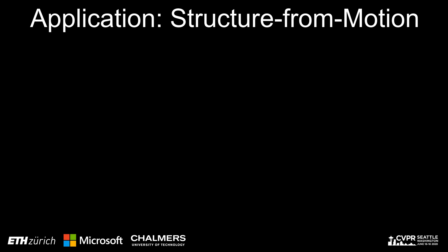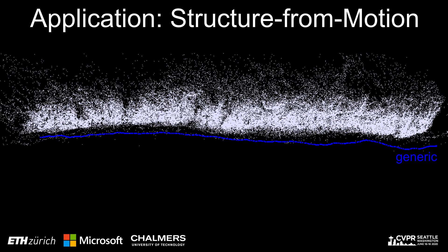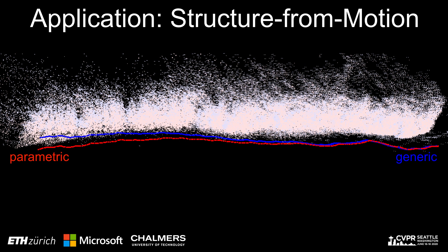A natural question is whether the bias has any impact on applications. To answer this, we conducted a structure from motion experiment. Since no ground truth is available, we compare the drift between trajectories obtained with a generic camera model and a parametric model. In this case, we observe a drift of about 2% over the length of the trajectory. This is significant, as state-of-the-art SLAM systems typically exhibit a drift of 1% or less.